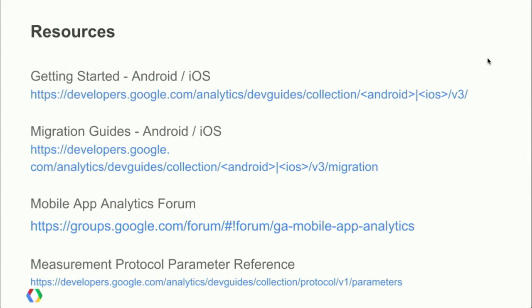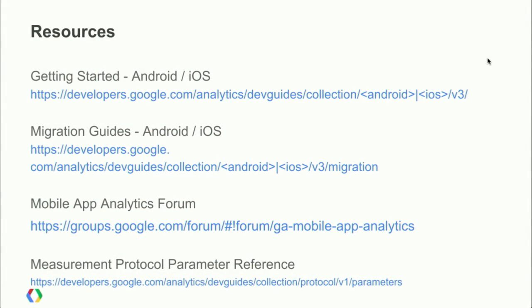That brings us to the end of this edition of Behind the Code. Resources include Getting Started Guides for v3 SDKs for both Android and iOS at developers.google.com/analytics, Migration Guides covering v2-to-v3 and v1-to-v3, a mobile app analytics forum with active participation, and a measurement protocol parameter reference for using ampersand syntax in the SDKs. Thanks for joining us — feel free to reach out on Google Plus, and we'll catch you next time.